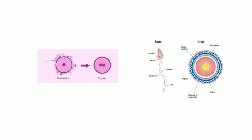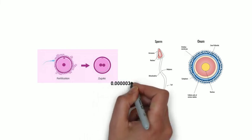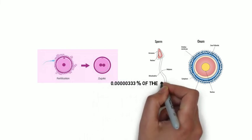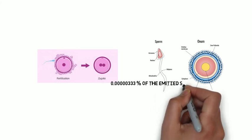Furthermore, it is well known that only a very small percentage of sperm is used in the fertilization process. This small percentage is estimated at 3.33 times 10 to the power of minus 6% of the emitted sperm.